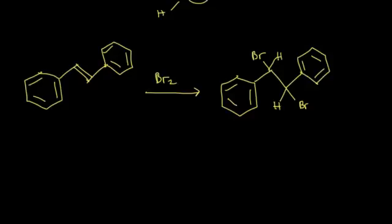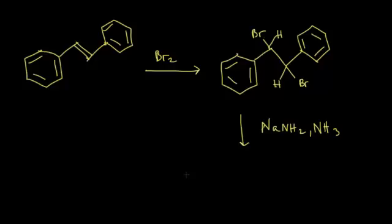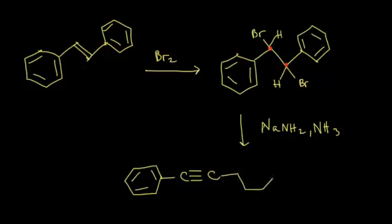If we add an excess of sodium amide in ammonia to our vicinal dihalide, we get a double E2 elimination reaction. Those halogens leave and a triple bond forms between the two carbons that previously held the bromines. On either side of that alkyne we have phenyl groups, so we draw in our benzene rings to get diphenylacetylene as our product. So you can synthesize alkynes from alkenes, or directly from a dihalide — this is one way to do it.